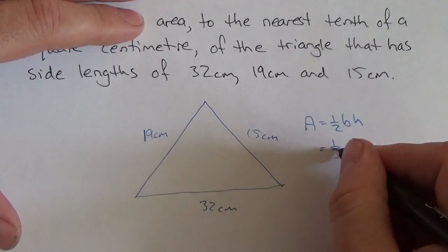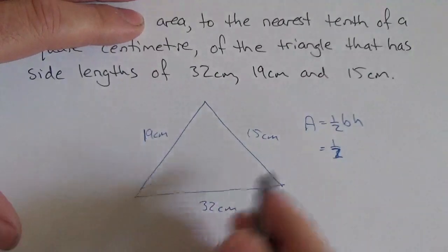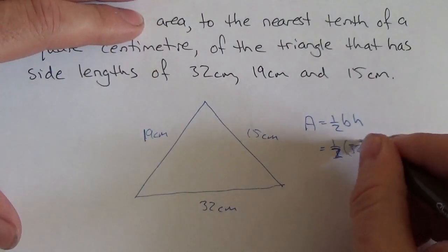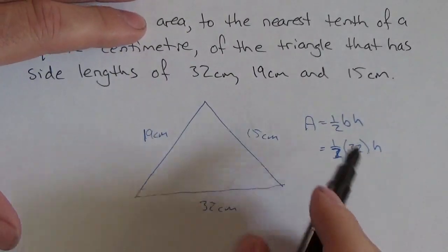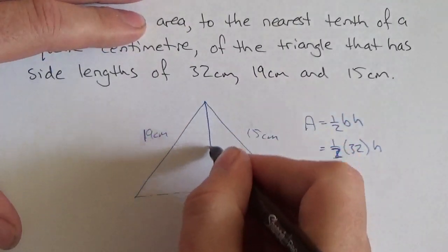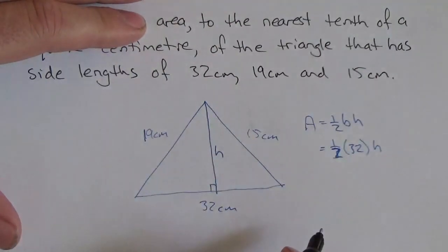Now, I could have made that anything. Could have made the base 19 or 15. It's just easier to make it the 32 here. So one-half, 32 centimeters. What I'm missing here is the height. So let's drop an altitude right there. And that's going to be my height.